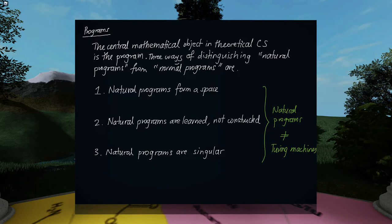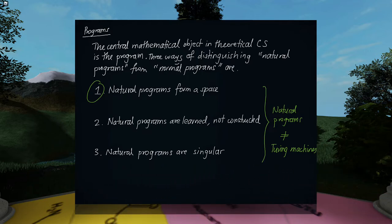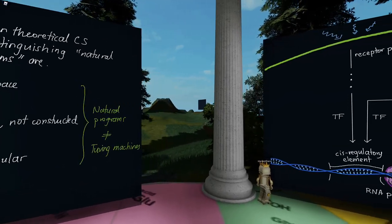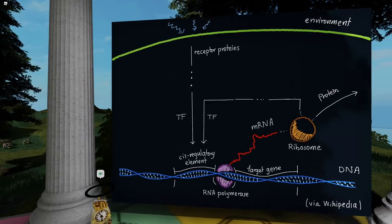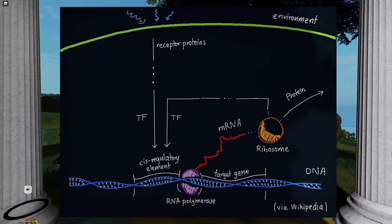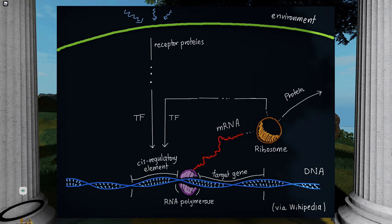We'll hear later in the seminar series from a speaker who's done interesting work on the possibility for universal computation using RNA, which would push against that statement — that'll be interesting to argue about. I'm planning to give some background on GRNs first, and I'm not sure how much I'll get through in this first lecture, so maybe this is actually a plan for two seminars.